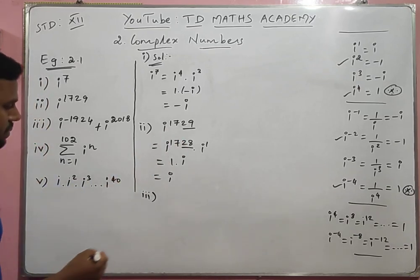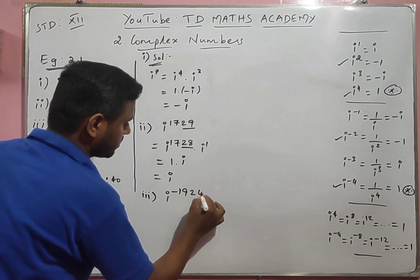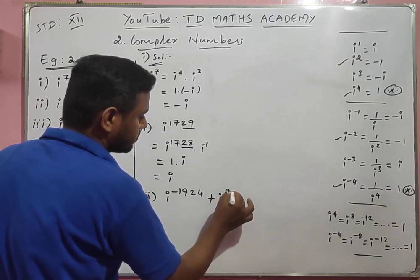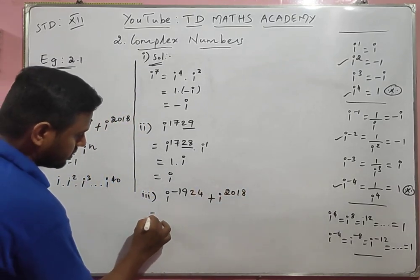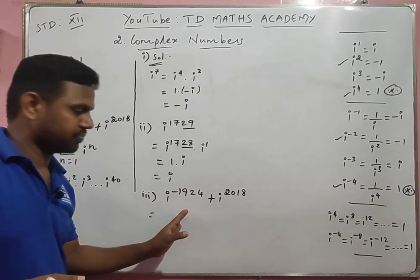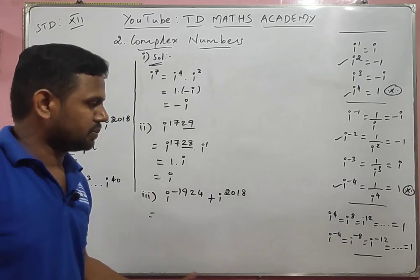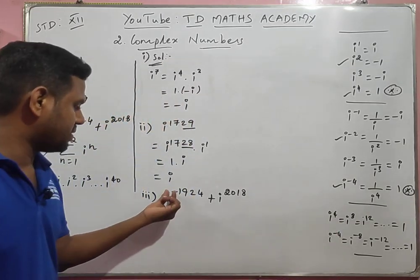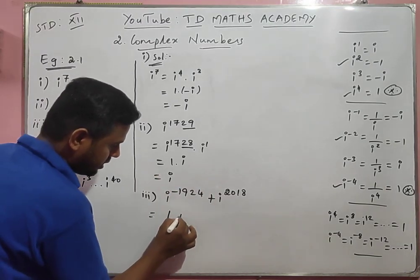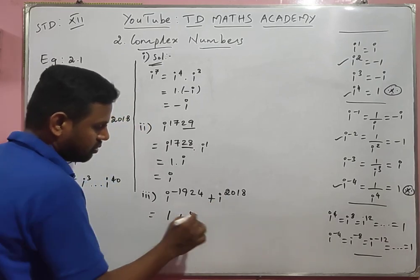Third sum: i power minus 1924 plus i power 2018. For the first term, check if 1924 is divisible by 4 — the last two digits are 24, which is a multiple of 4. Therefore the whole number is a multiple of 4, so i power minus 1924 equals 1.